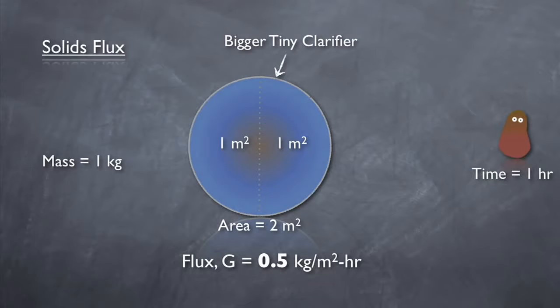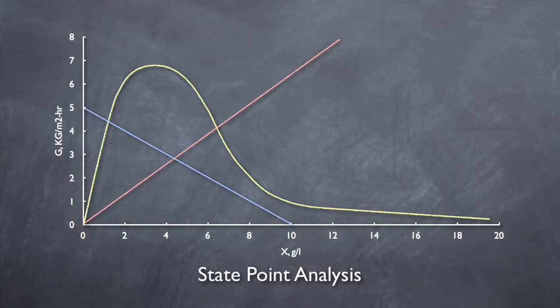By using flux, one can compare clarifiers of different sizes and loads on an equal basis. Now that we've covered both axes of the diagram, let's get to the three main components.